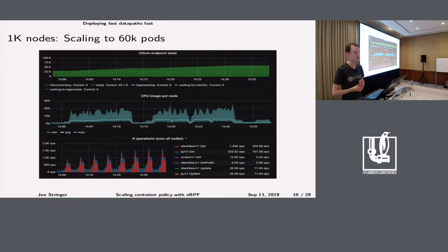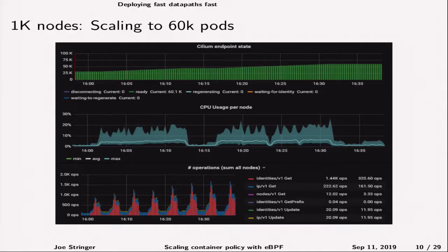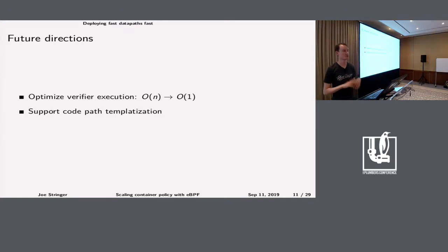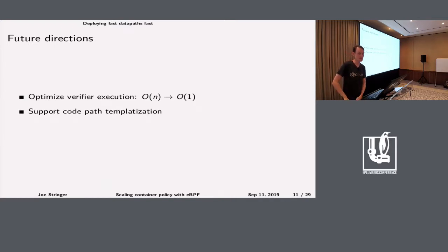In this Grafana dashboard, we're demonstrating a thousand nodes in a GKE environment, scaling from 30,000 pods up to 60,000 pods. The average CPU usage is around 5% across the deployment time, with maybe one node reaching up to about 20% CPU for the Cilium container. We also did some work in libbpf and in the kernel to facilitate this. We optimized compilation from running the compiler once for every single pod deploy to just running it once and then attaching n times.